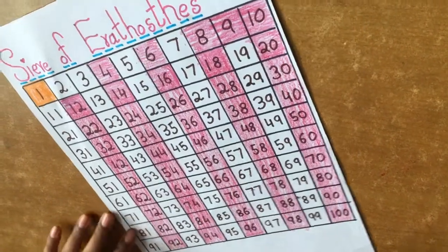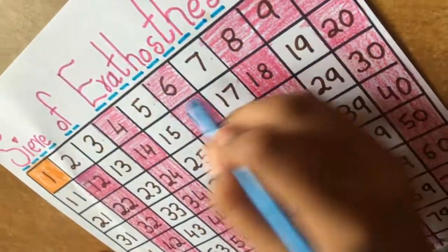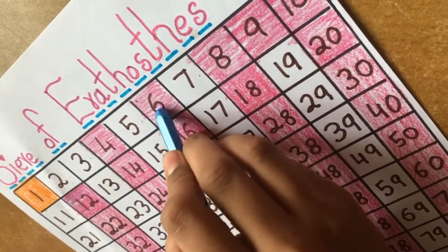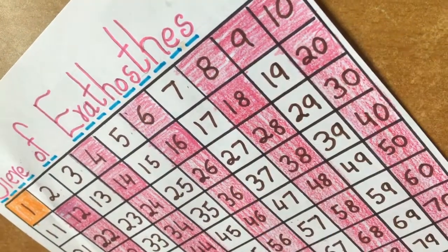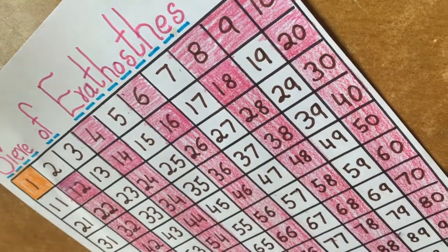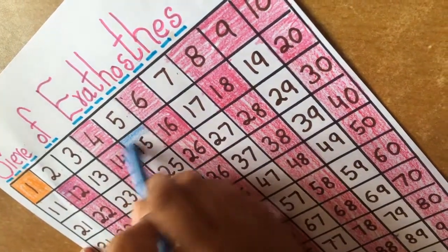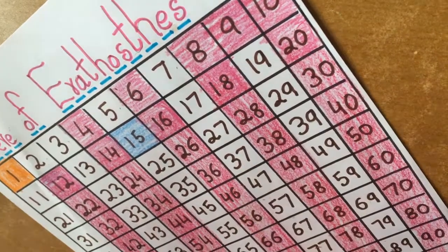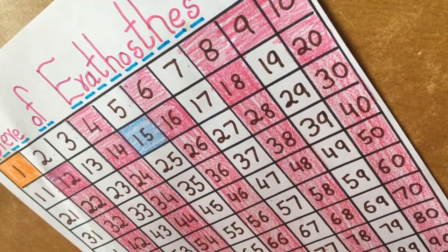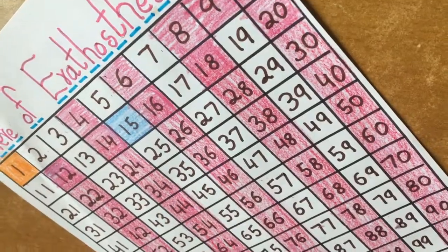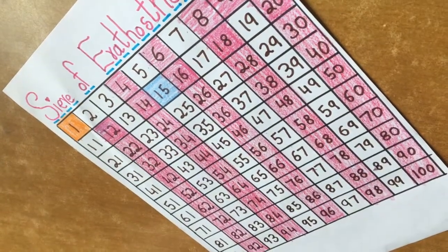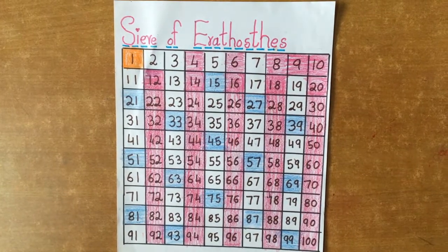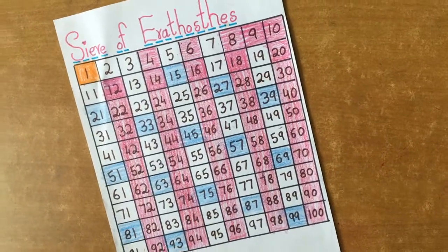Now we are going to mark the 3 multiples. 6 is already marked, 9 is already marked. If it is already marked, we don't need to mark. Like this we have to color all the multiples and mark all 3 multiples.